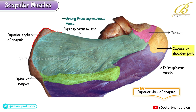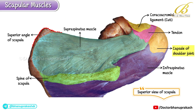Laterally, the cut end of the coracoacromial ligament can be seen attached to the coracoid process. The coracoid process also gives attachment to the coracoclavicular ligament, which stabilizes the connection between the clavicle and the scapula.